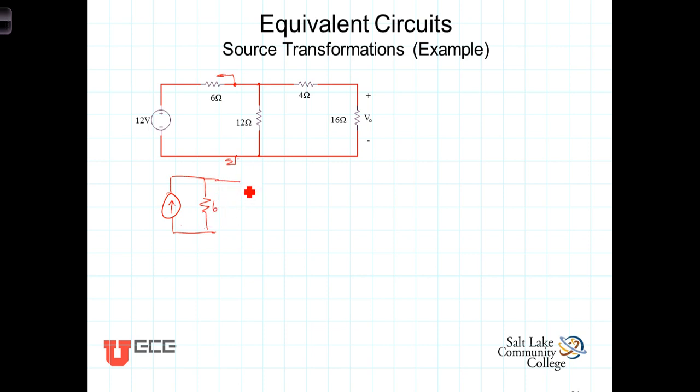The rest of the circuit will remain unchanged at this point. There's the 12-ohm resistor, 4-ohm resistor, the 16-ohm resistor, and there's the voltage V-out that we're looking for. Now what does the value of this current source need to be?